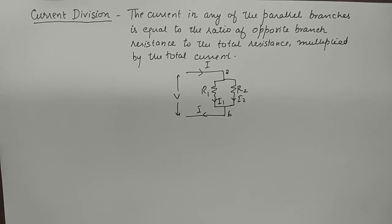The statement of this rule is pretty simple. It says that the current in any of the parallel branches is equal to the ratio of opposite branch resistance to the total resistance, multiplied by the total current.